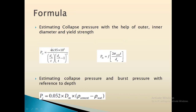The formulas to use are: collapse pressure P_CR = 46.95 × 10^6 / [(d/t) × (d/t − 1)²]; burst pressure = wall thickness correction factor × 2 × yield strength / (d/t); and for estimating the required depth pressure: 0.052 × required depth × (density of cement − density of water).